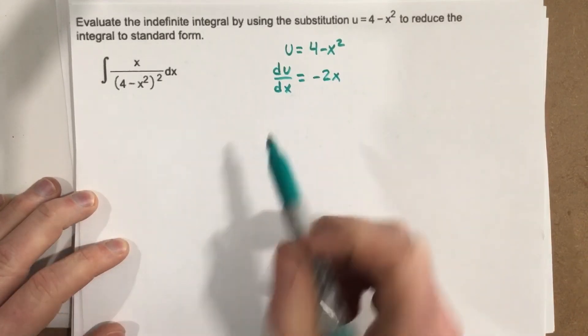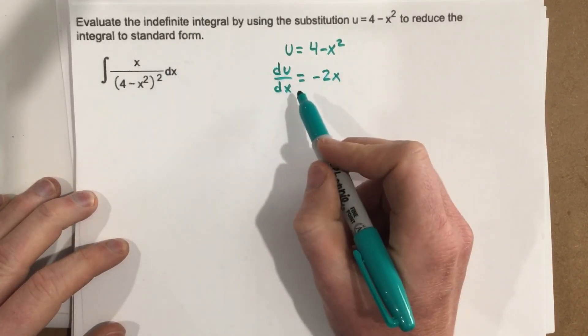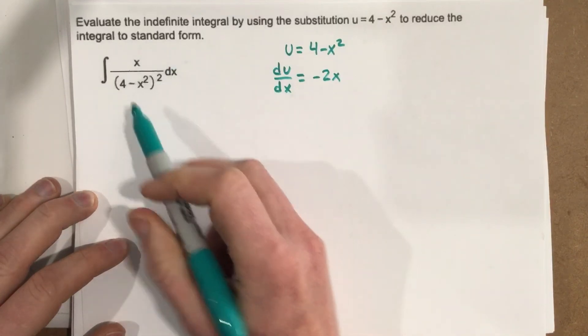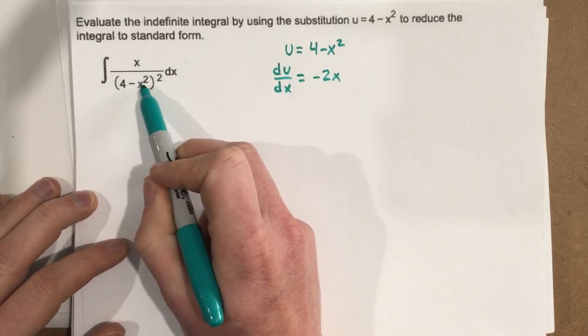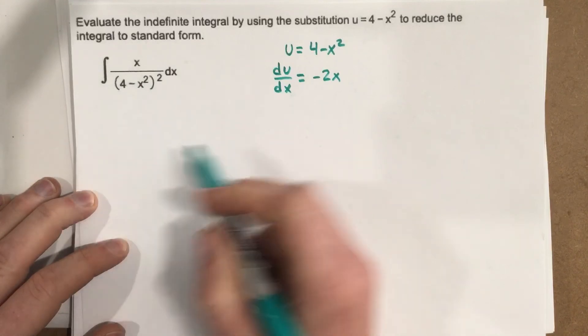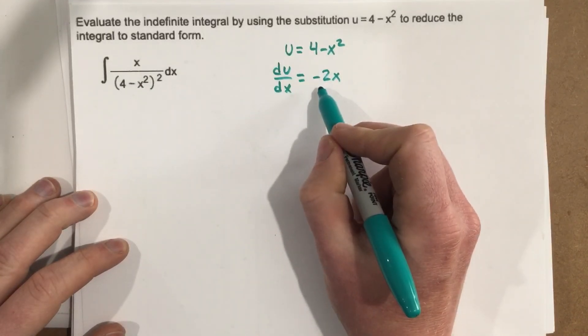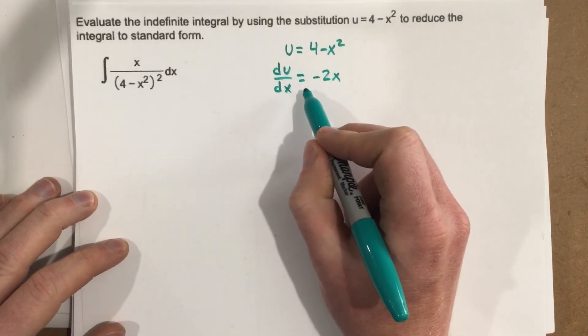Now my goal here is to replace dx with some expression and to replace 4 minus x squared with u of course. So I need to rewrite this so it says dx equals something.